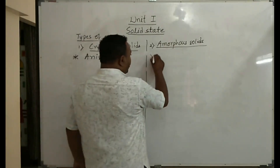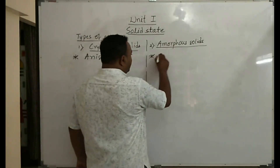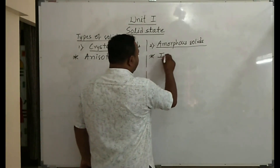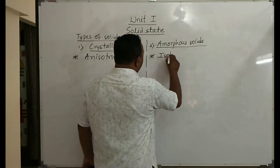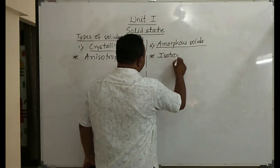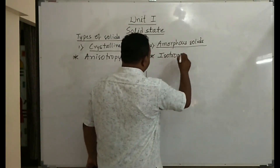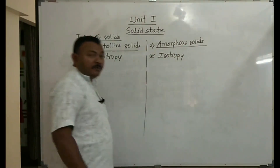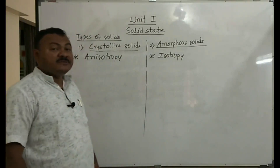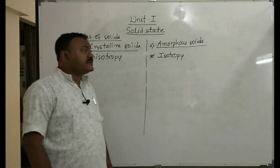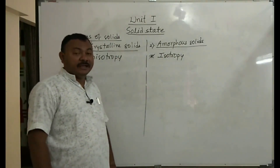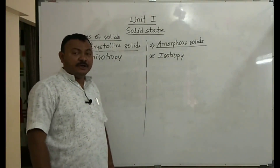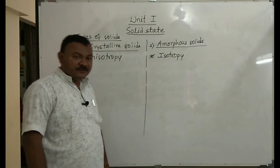In amorphous solids, we observe isotropy — physical properties measured are the same in all directions. This is called isotropy.